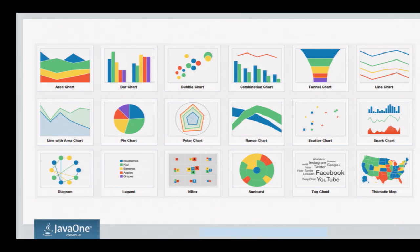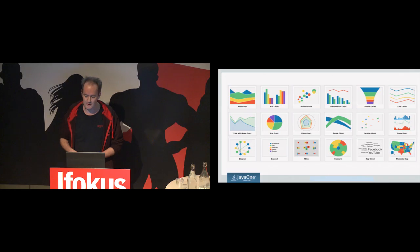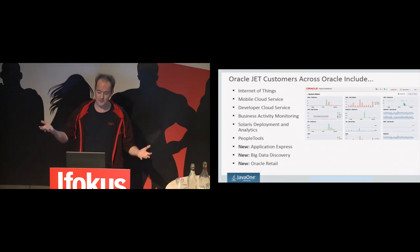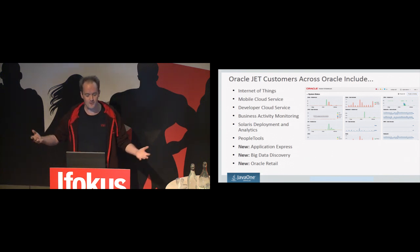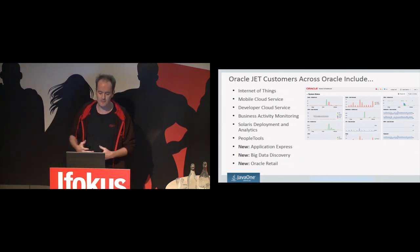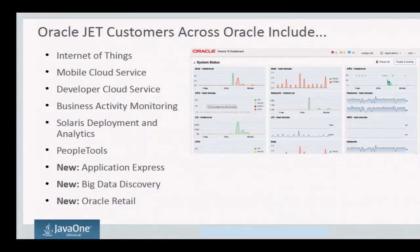This is basically what Jet is. Jet is a set of jQuery UI components on top of a set of open source libraries that have been used over the past three years in various applications created by Oracle. Within Oracle there are a number of customers of Jet already — Internet of Things, mobile cloud service, developer cloud service — all these different cloud services need some kind of application to visualize data, and increasingly people are doing this with Jet.